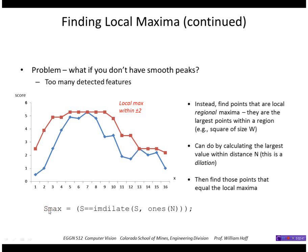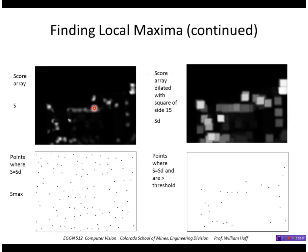So here is the score image. Here is the score image dilated with squares of size 15 by 15. So these points are the peaks. They're the largest points within a region of 15 by 15.